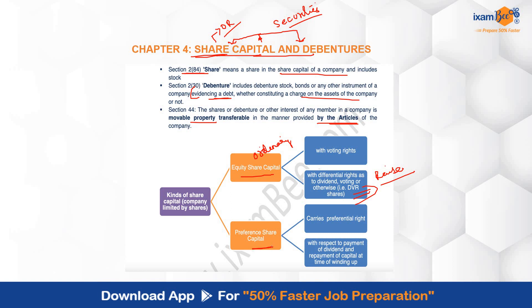Then, preference share capital or preference shareholders — there is some preference given to these shareholders with respect to the payment of dividend and repayment of capital at the time of winding up. Preference shareholders carry preferential rights over equity shareholders with respect to payment of dividends and distribution of assets at the time of winding up. Preference shareholders generally do not have voting rights on each and every resolution, but they do have voting rights on matters concerning their own rights and preferences. However, when dividend has not been paid for 2 years or more, preference shareholders can also vote on each and every resolution placed before the company.